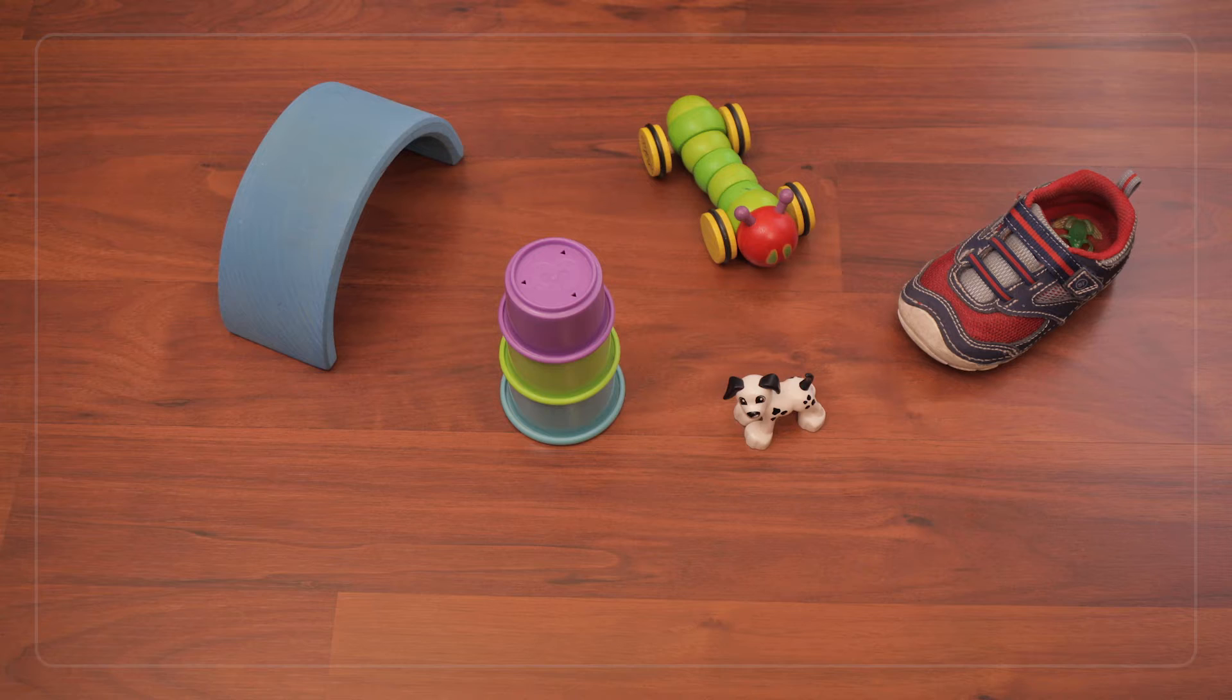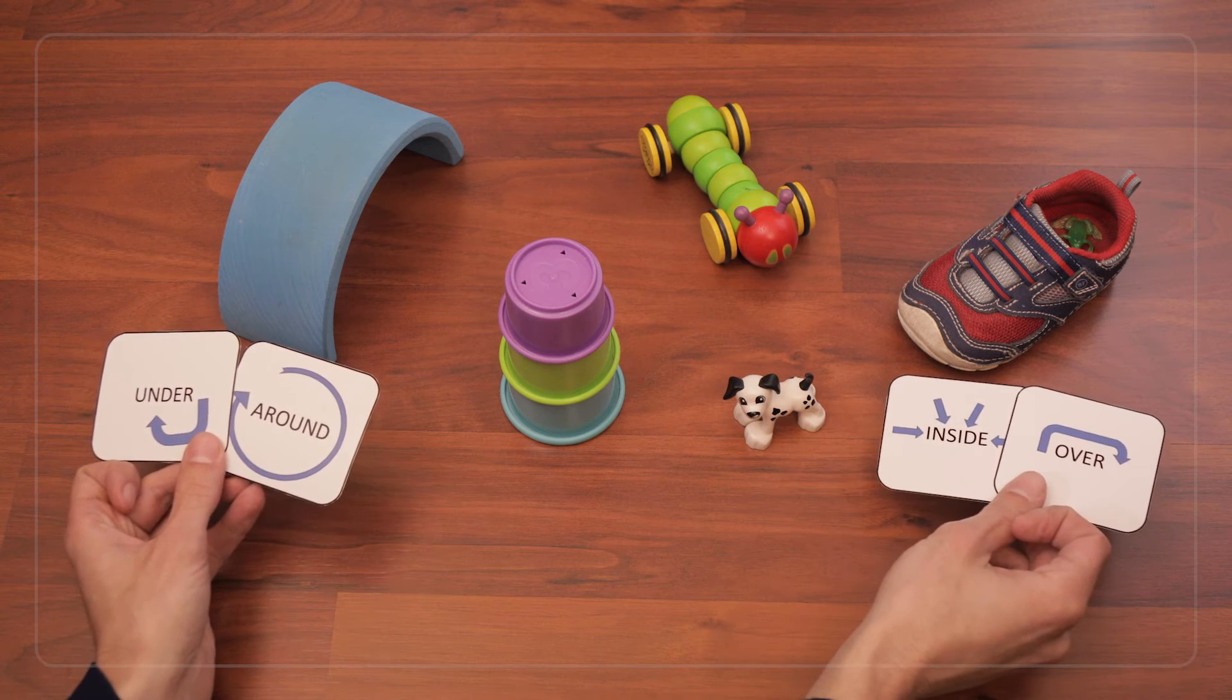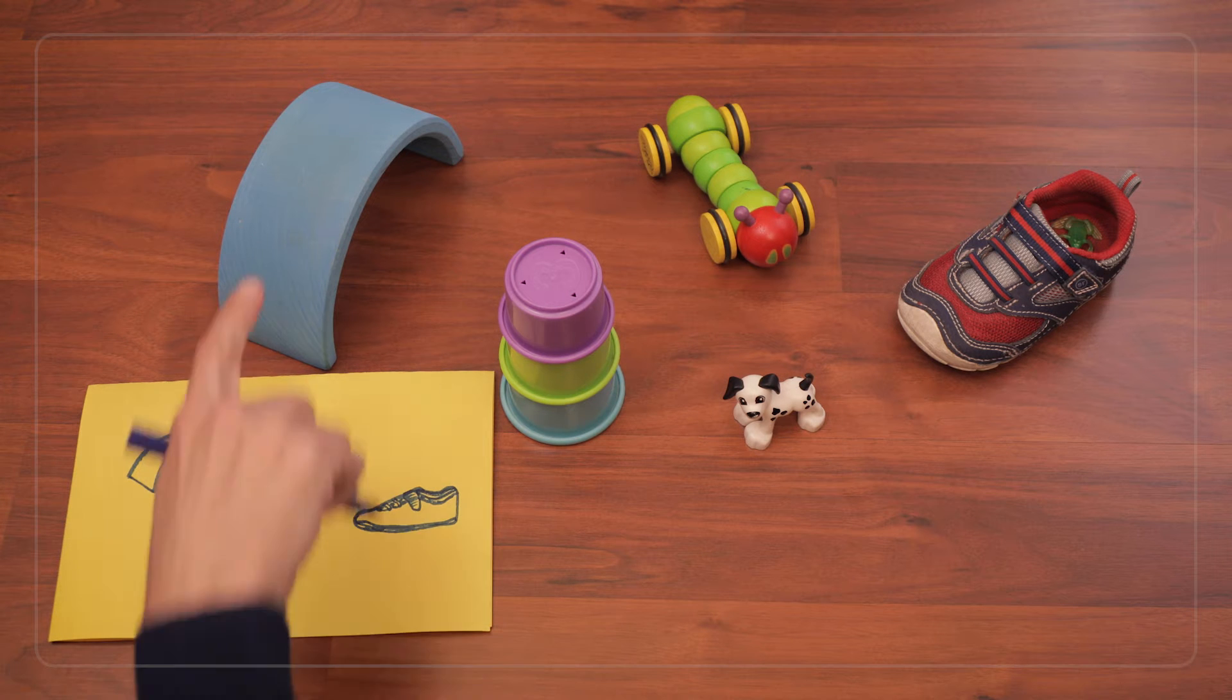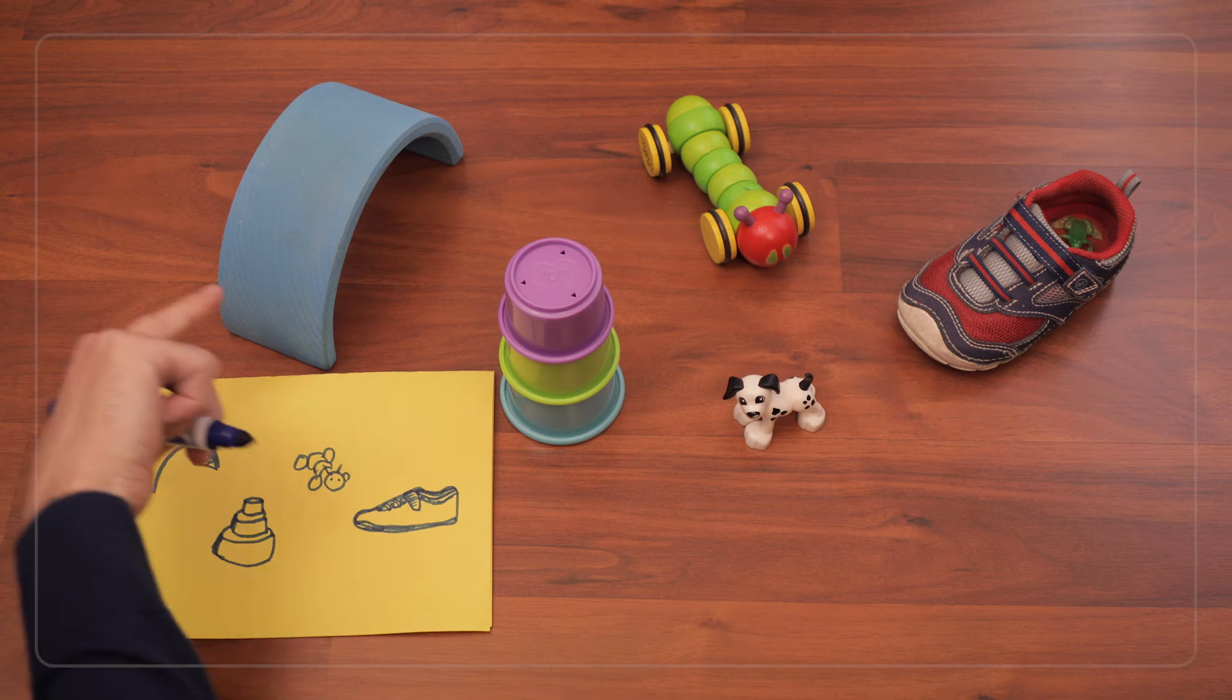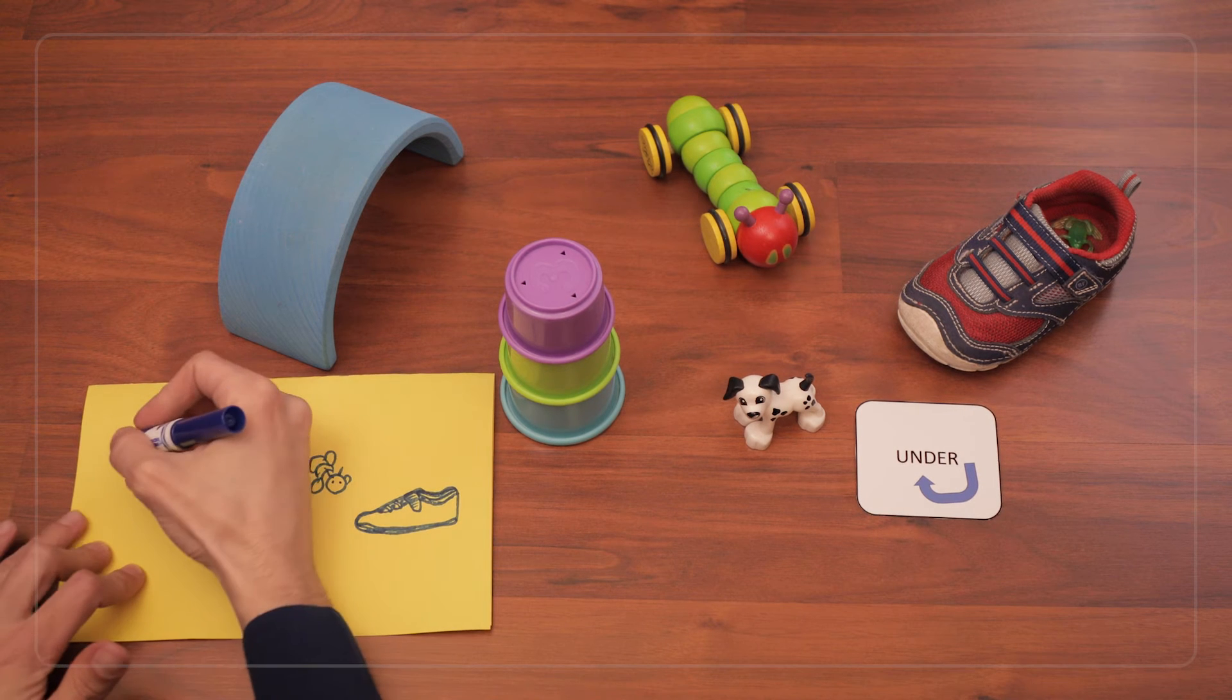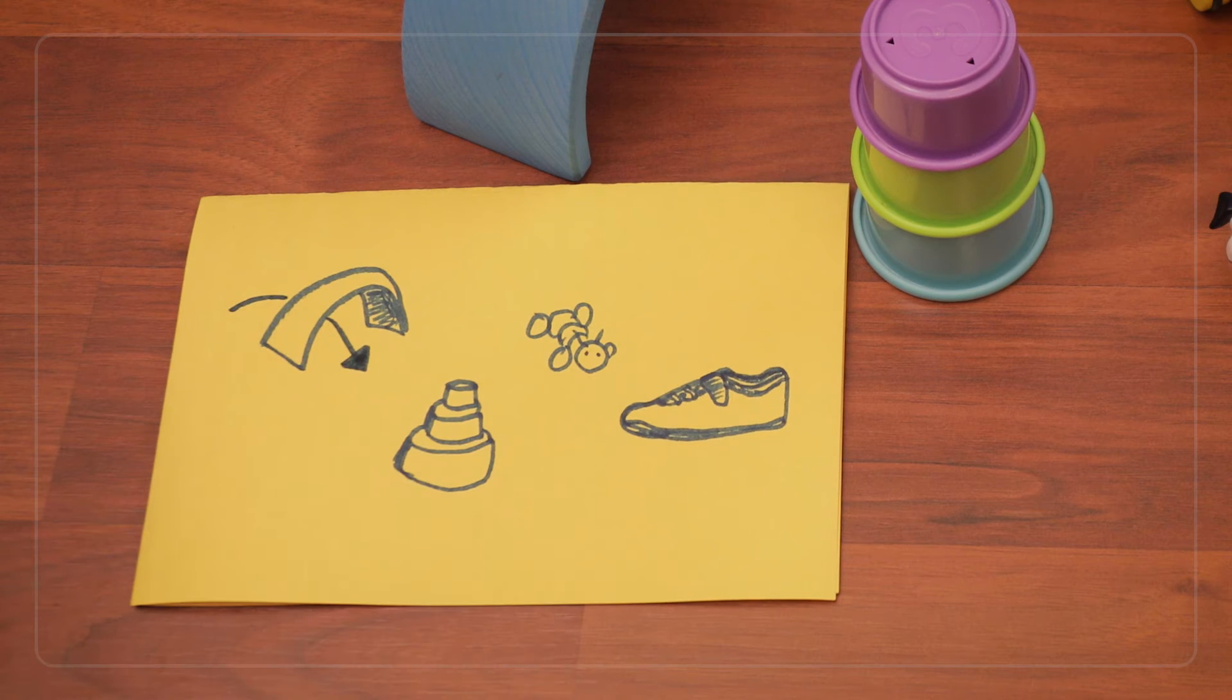Once we have our map, we'll use our spatial word cards to describe and draw the path we took through the course. So at the wooden arch, we went under, and we'll use our under spatial card to help remind us of that, and we'll draw an arrow like this to show under.